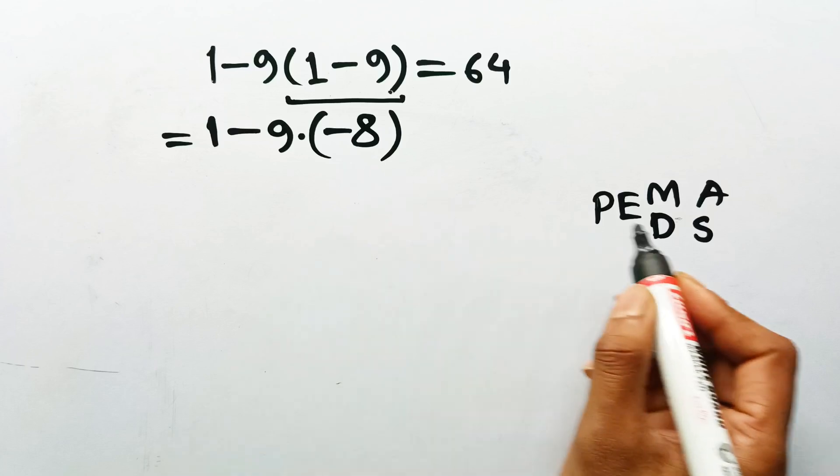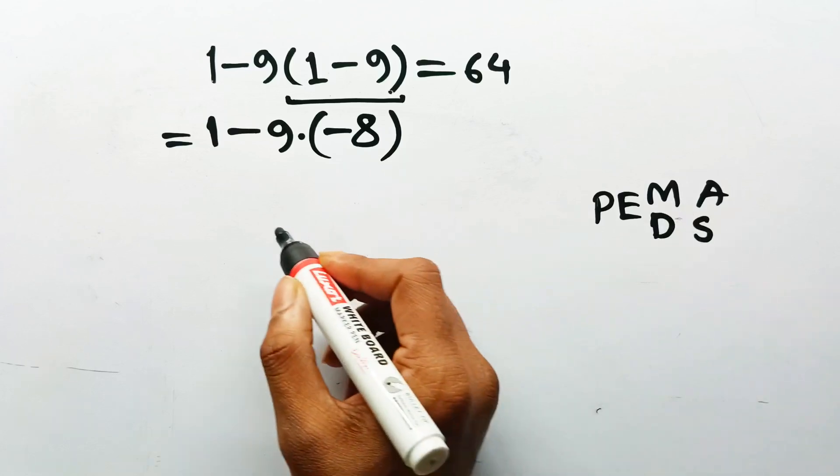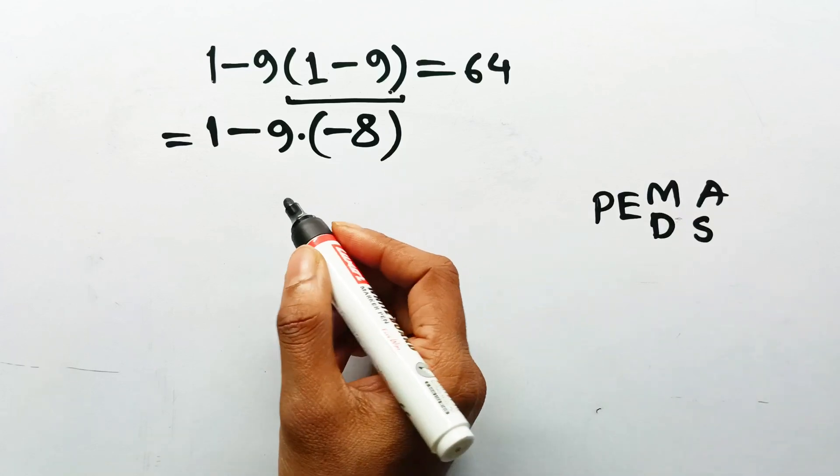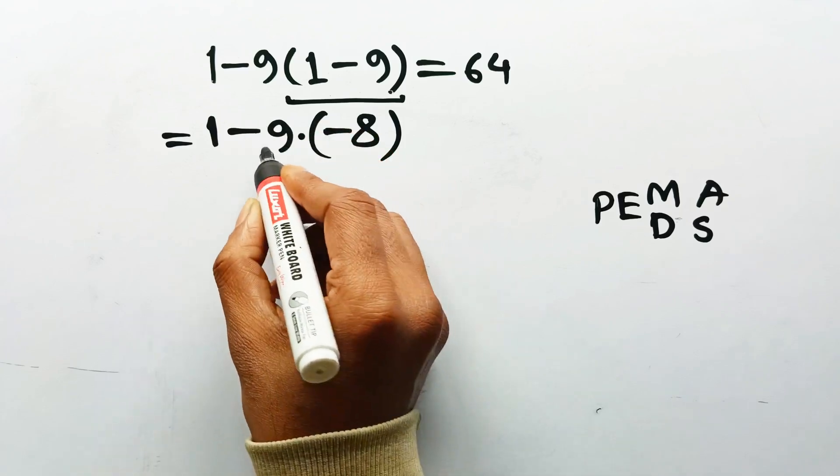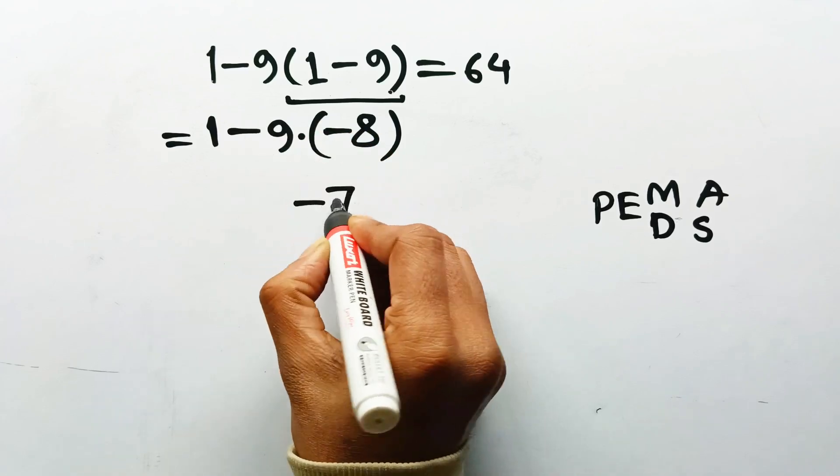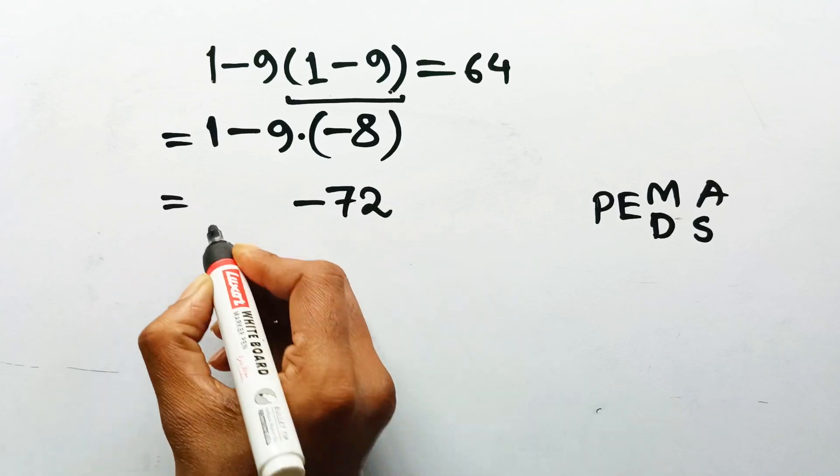Multiplication comes before subtraction. Every time. No exceptions. No vibes. So, we handle the multiplication next. 9 times negative 8 is negative 72. Now, rewrite the expression honestly.